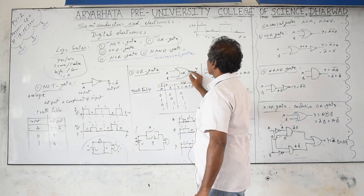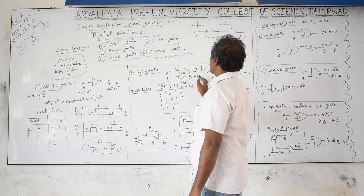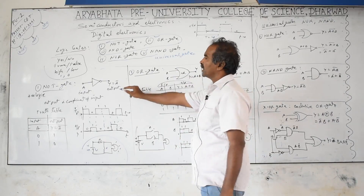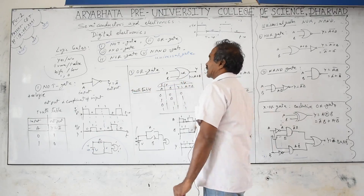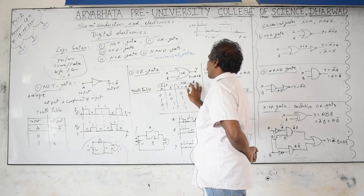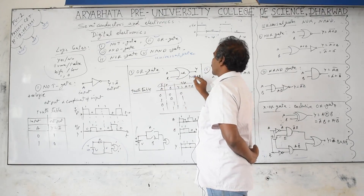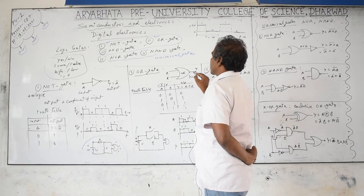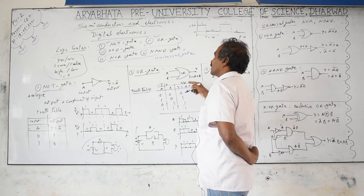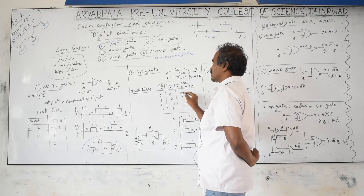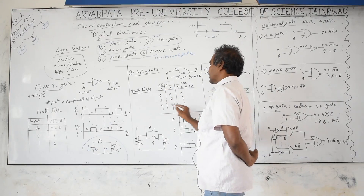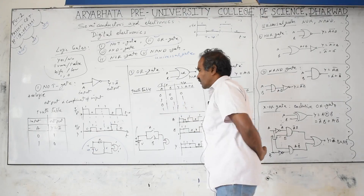The OR gate has two inputs A and B, with output Y = A + B. NOT gate has single input and single output, but OR and AND gates have two inputs and one output. Truth table for OR: 0+0 = 0; 1+0 = 1; 0+1 = 1; 1+1 = 1 (do not write 2 — output is 1/high only). Output is high if either A or B is high.